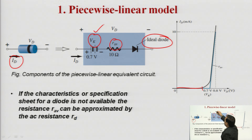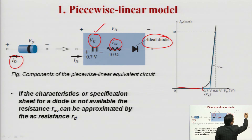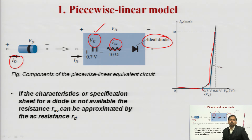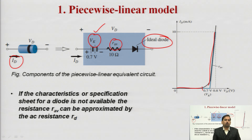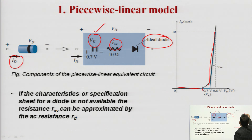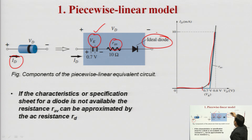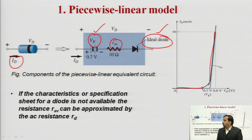We have the first battery. After that, the characteristics have some slope, meaning some finite resistance — this is the average resistance or AC average resistance. During forward bias of the p-n junction, the value of this average resistance is very very small, giving a slight linear curve. We then connect an ideal diode in series with the average resistance R_AV and a battery of V_k volts. These are the components of a piecewise linear equivalent circuit.